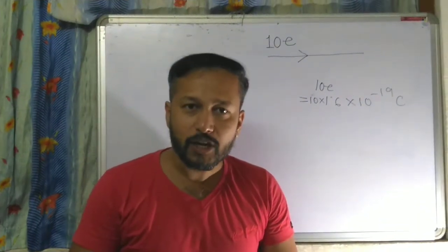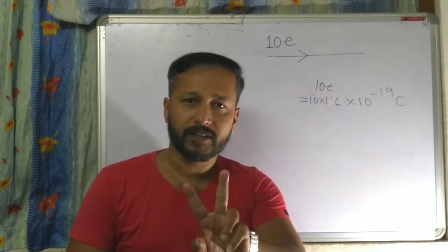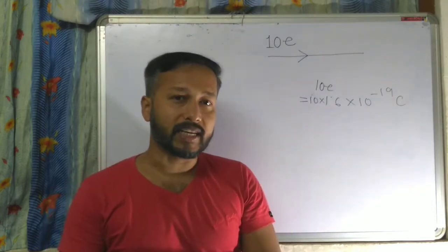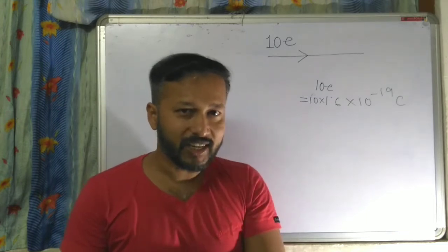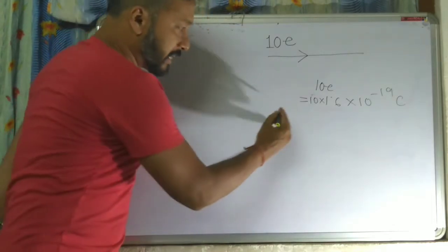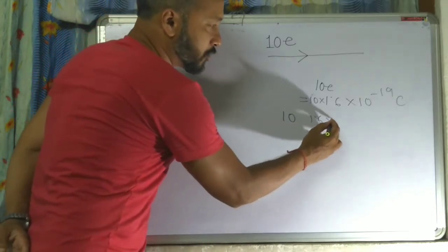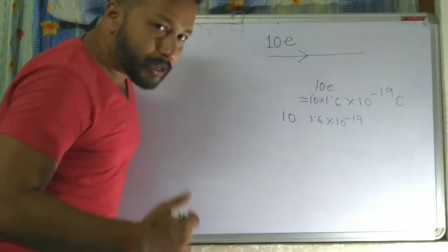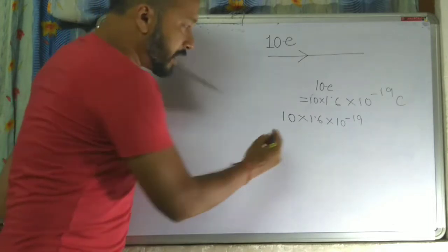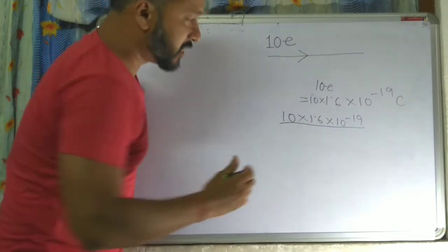If 10 electrons are passing in just 2 seconds through this wire, then the number of electrons is 10. The charge of one electron is 1.6 into 10 to the power minus 19. The total charge passing is 10 into 1.6 into 10 to the power minus 19, divided by time, which is 2 seconds.